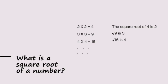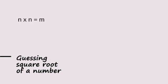But what is the square root of a number? 2 into 2 is 4, 3 into 3 is 9, 4 into 4 is 16. So we can say that square root of 16 is 4, square root of 9 is 3, square root of 4 is 2. That is, one number multiplied by itself gives you m. The square root of m will be n.